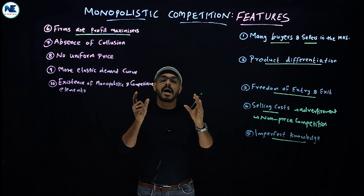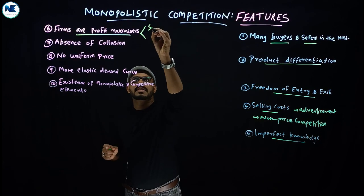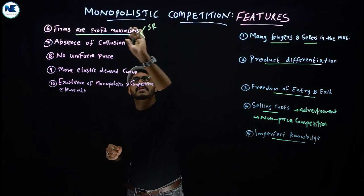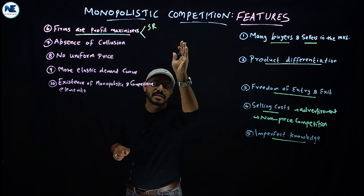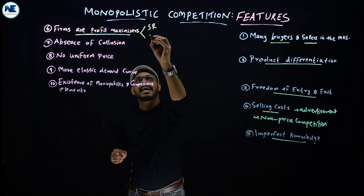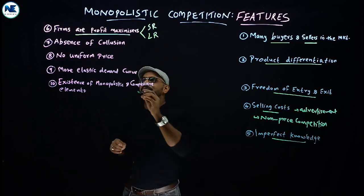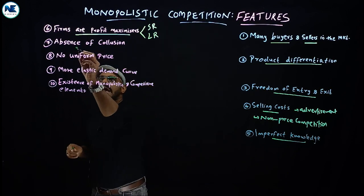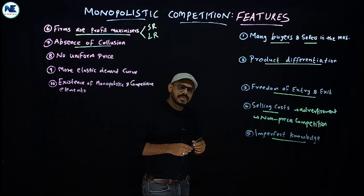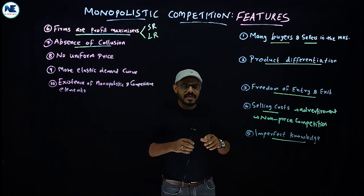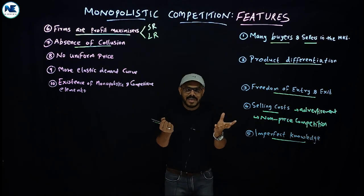The seventh point is that firms are profit maximizers. The aim of firms in monopolistic competition is profit maximization, both in the short run and in the long run, similar to firms in other market structures.